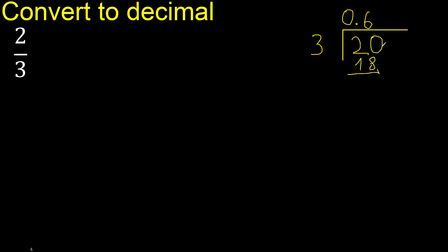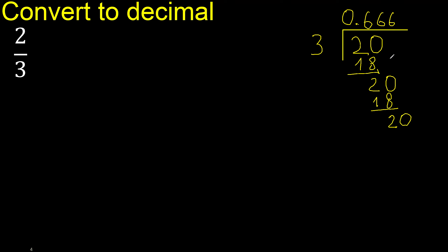20 minus 18 is 2. Here there is no number, therefore complete — always complete with 0. Point is here: 20, 3, multiply by 6, 18, subtract 2. Always complete with 0. Multiply by 6, 18.